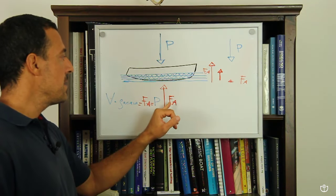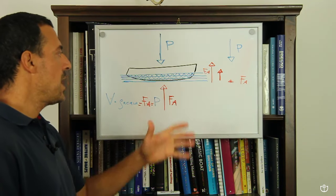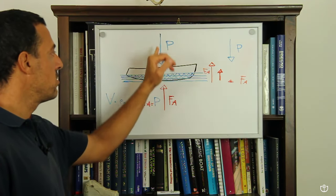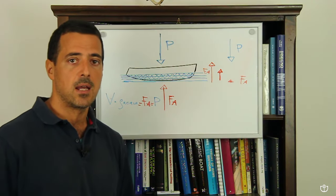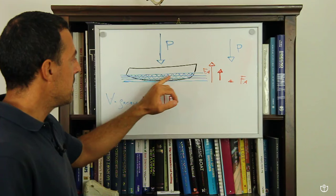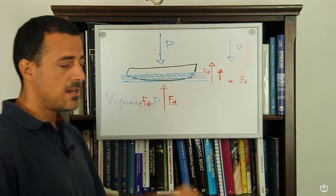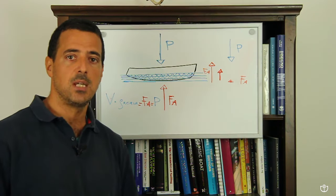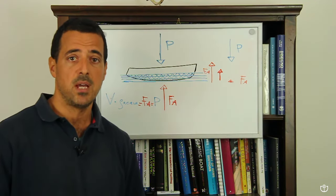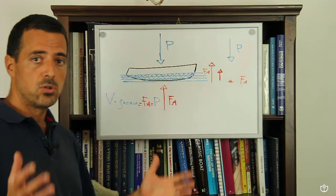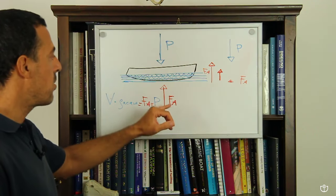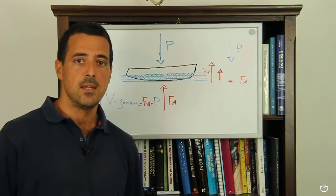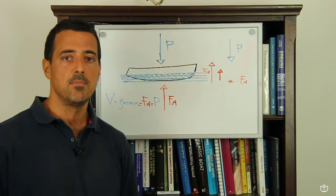Determinata la spinta di Archimede, riusciamo a valutare la congruità di questa spinta con il peso che abbiamo preventivato per la nostra barca. Ricordiamo che per far sì che la nostra barca galleggi su quella linea di galleggiamento che noi abbiamo disegnato sul piano di costruzione, il peso totale dell'imbarcazione e la forza di Archimede devono essere uguali nel modulo, si devono equilibrare.